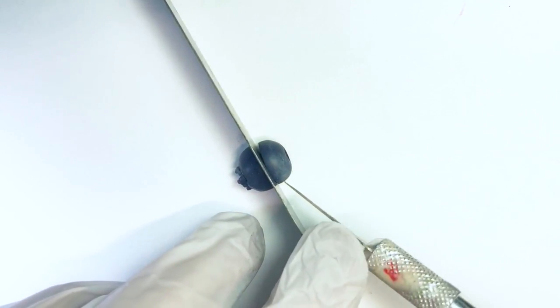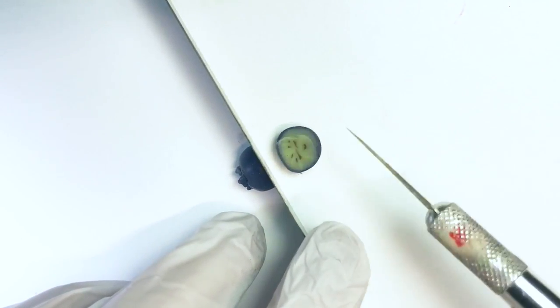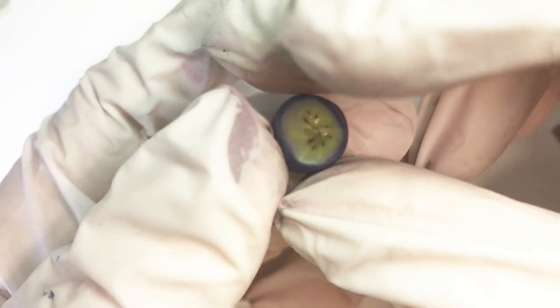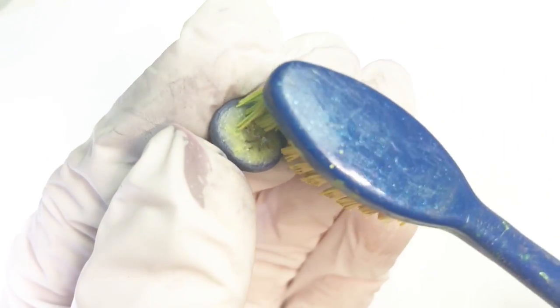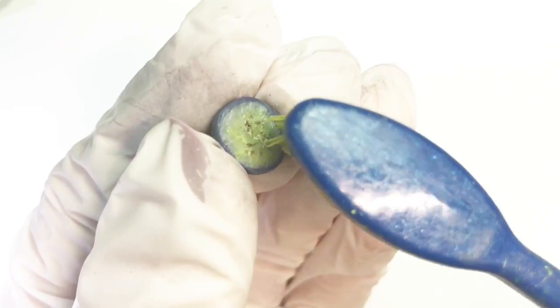Now for the most fun of all. Cut through your fruit and see what's inside. Does it look real? Alright, maybe not yet, but we're getting there. Now just add some texture with a toothbrush and a needle tool.